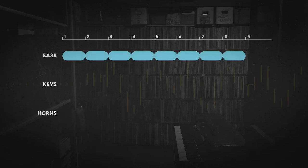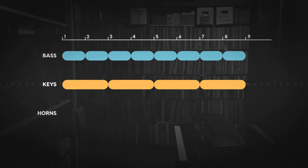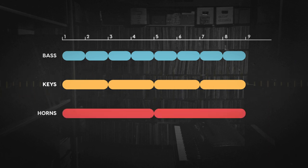Make your bass line a one-bar loop, make your keyboard line a two-bar loop, and then put something else — it doesn't matter — have a third element that's a four-bar loop, and see what that does.